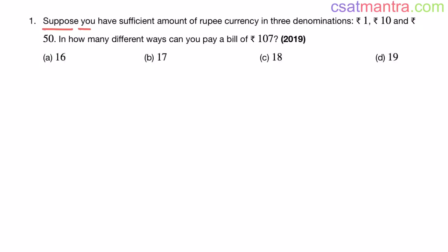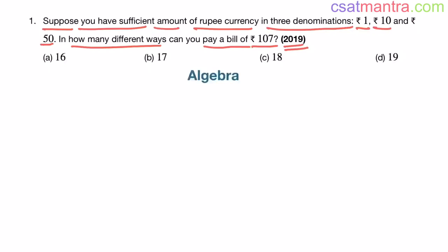Suppose you have a sufficient amount of rupee currency in three denominations: 1 rupee, 10 rupees, and 50 rupees. In how many different ways can you pay a bill of 107 rupees? This question was asked in 2019 and is from the algebra chapter — a real life application oriented question.